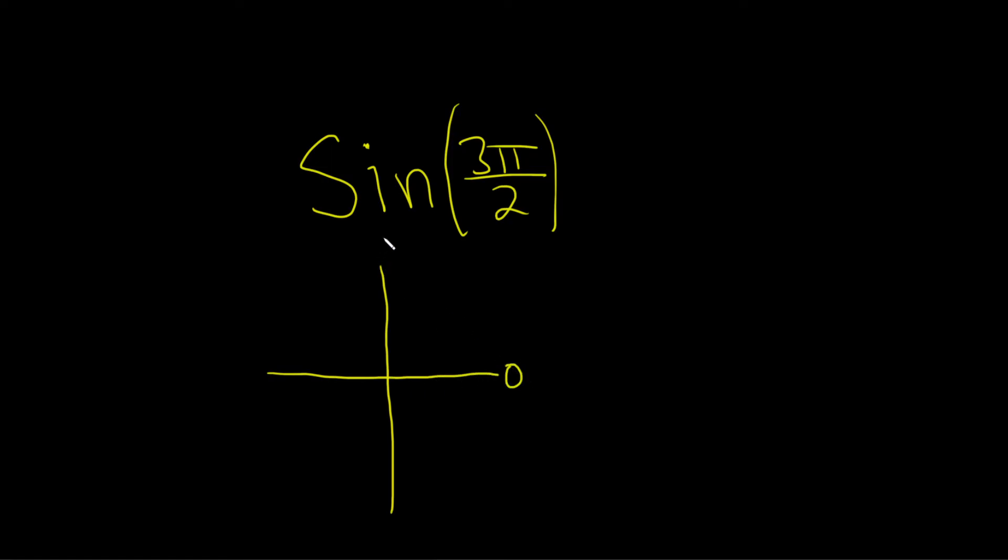This angle here is 0. This one is pi over 2. This one is pi. And this one down here is 3 pi over 2. And this is a really powerful strategy by the way. I mean this is a simple problem but this is super useful.